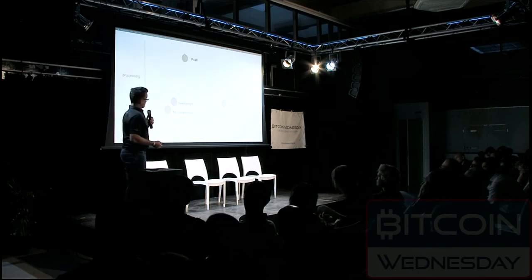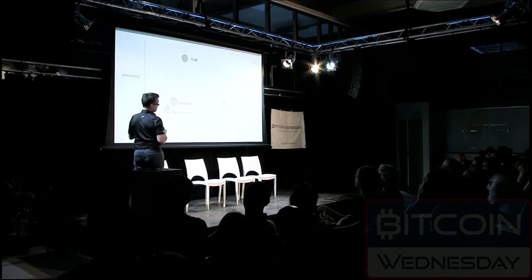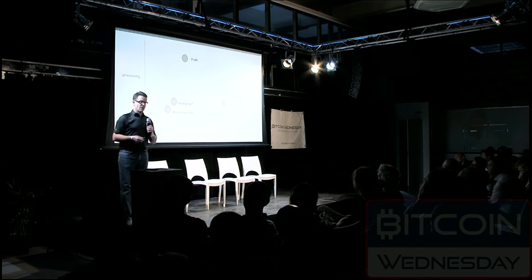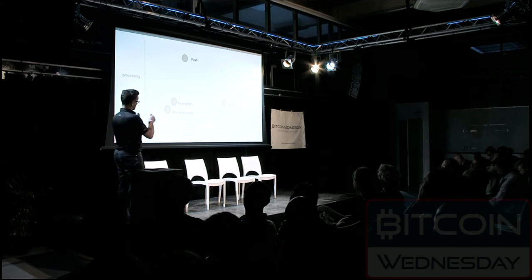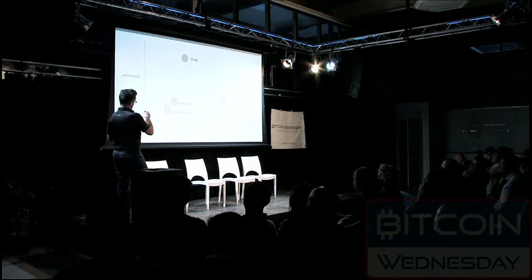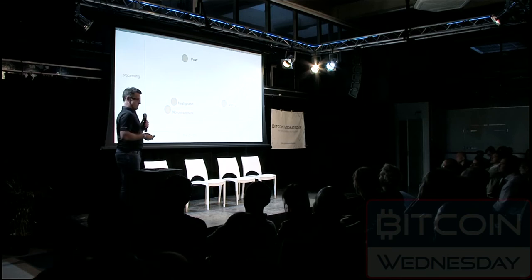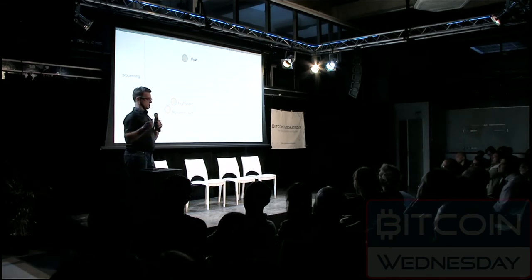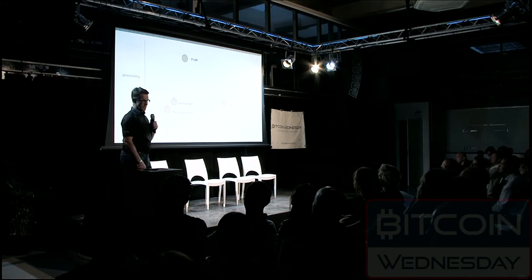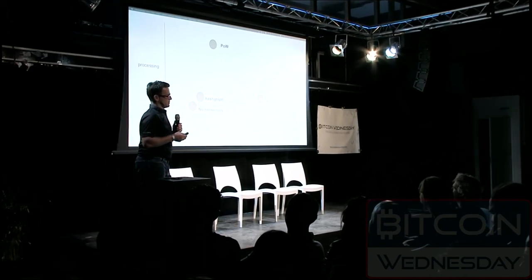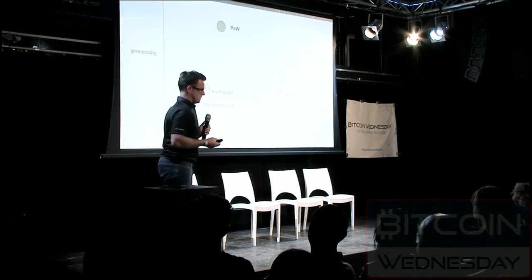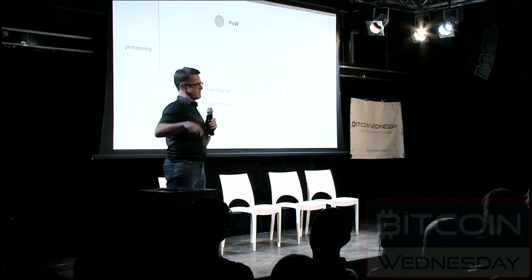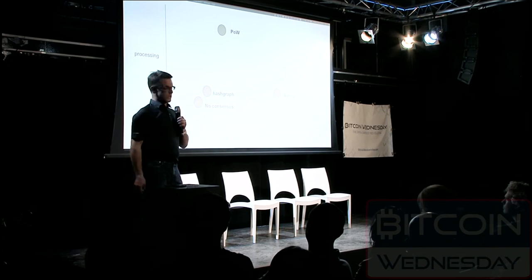We're fast because we're efficient. There's no proof of work, so we don't artificially slow things down — we run as fast as the bandwidth allows. With respect to bandwidth, we're efficient because there are no votes flowing across the network. That voting algorithm I described is virtual: everybody runs it independently, you don't share your votes, you just come to the same conclusion and move on.